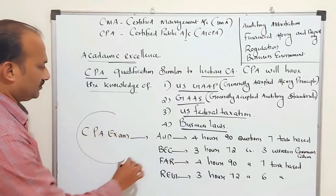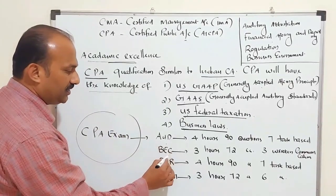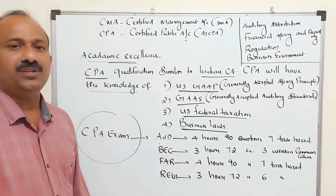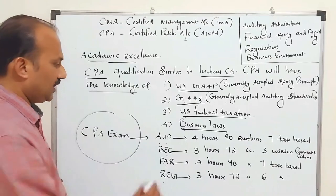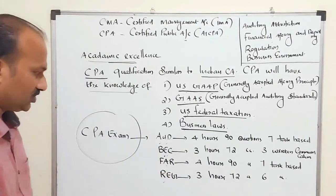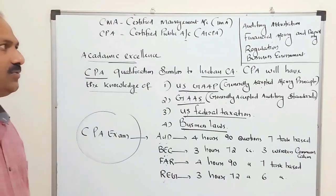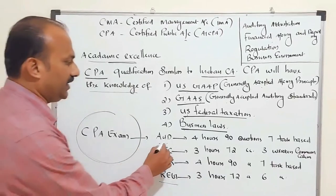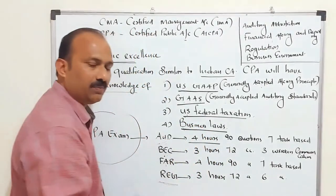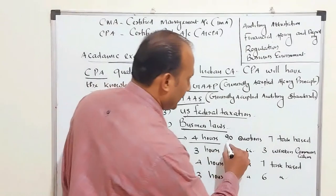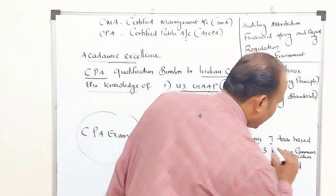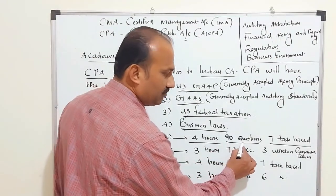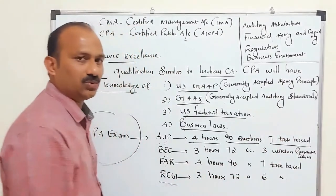The CPA exam consists of four sections: AUD (Auditing and Attestation) — 4 hours, 90 multiple-choice questions, and 7 task-based questions; BEC (Business Environment Concepts) — 3 hours, 72 multiple-choice questions, and 3 written communication tasks.